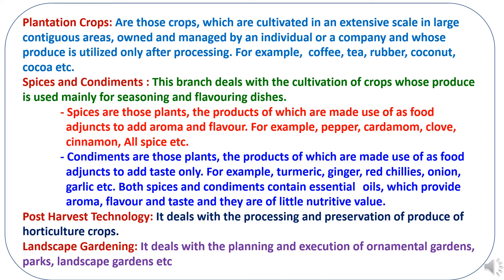Condiments are those plants whose products are used in food to add taste only — for example turmeric, ginger, red chilies, onion, garlic etc. Both spices and condiments contain essential oils which provide aroma, flavor and taste, and they are of little nutritive value. The next division is post-harvest technology, which deals with the processing and preservation of produce of horticulture crops.